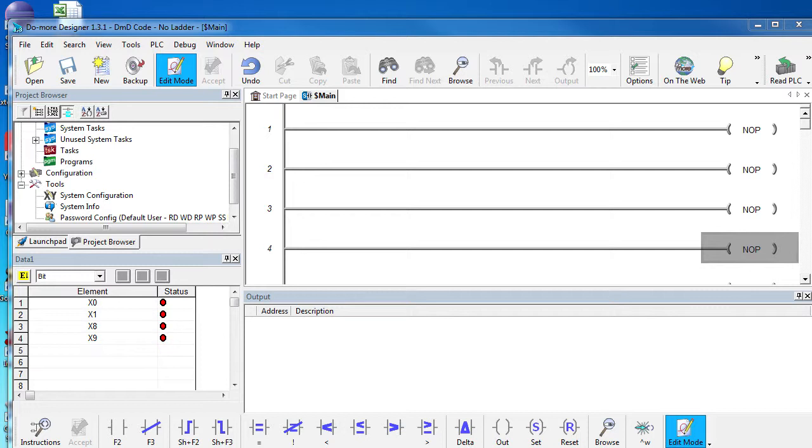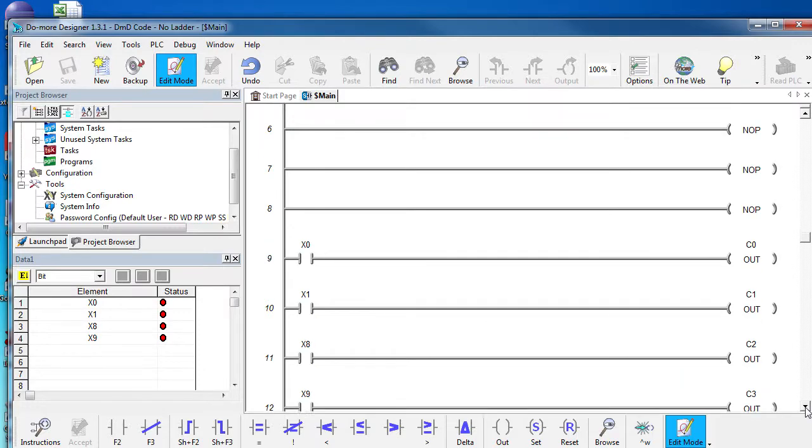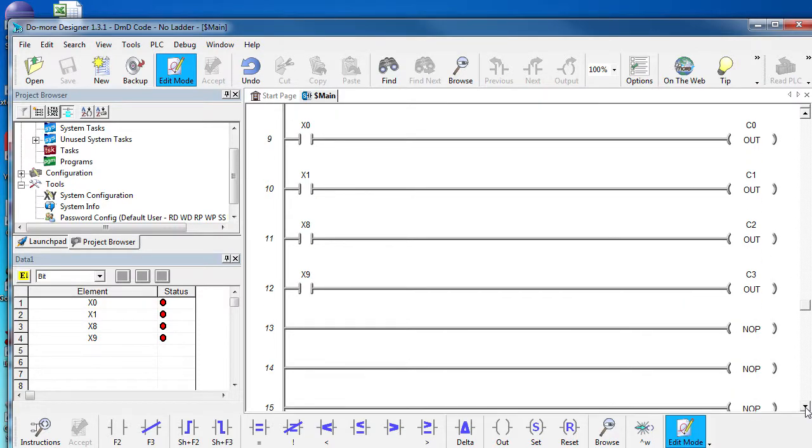Notice that even though the NPN sensors are pulling the input terminal low and the PNPs are pulling it high, none of that matters here. All we see in the data view is if the sensor is active. Once the sensor is properly wired, you don't need to worry about whether the signal is high or low. To use that in your ladder code, you just bring the inputs in as you would any other contact.